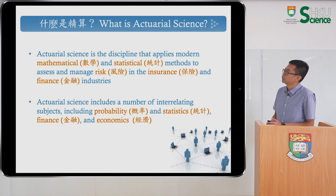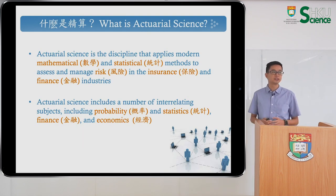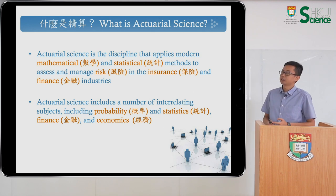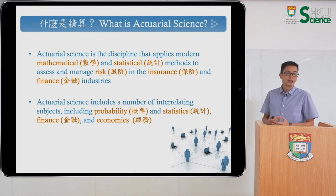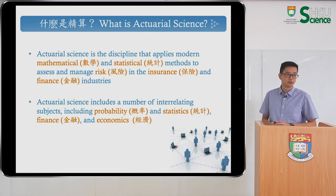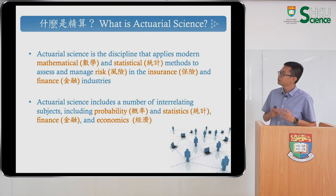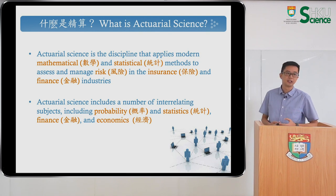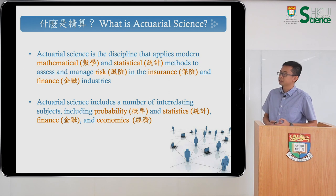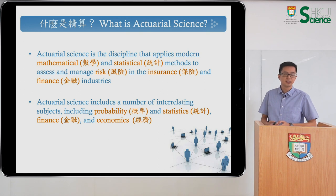Let's get started with this important question: What is actuarial science? It is a multidisciplinary subject that applies modern mathematical and statistical techniques to assess and manage risk in the insurance and financial industry. So the focus is really on insurance and finance. You will learn materials including both probability and statistics, and also economics and finance.